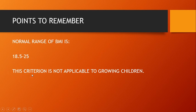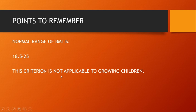एक बहुत important बात — यह criteria is not applicable to growing children। अगर आपने अपना BMI calculate किया और वो 18 से नीचे या 25 से ऊपर आया, तो don't worry। आप अभी उस age में हैं जहाँ आप growth कर रहे हैं — कभी weight बढ़ता है, कभी height बढ़ती है — तो balance stable नहीं होता। यह criteria applies to adults।